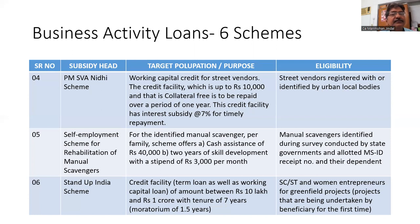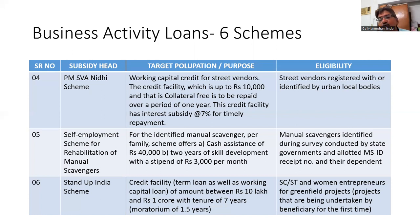Next is Stand Up India. It is a credit facility — both term loan and working capital loan — of an amount between Rs. 10,000 and Rs. 1 crore, with a tenure of 7 years and a moratorium period of 1.5 years. The moratorium is given so that the beneficiary can establish themselves before repayment begins. Who is eligible? SC, ST, and women entrepreneurs for greenfield projects — projects being undertaken by the beneficiary for the first time.